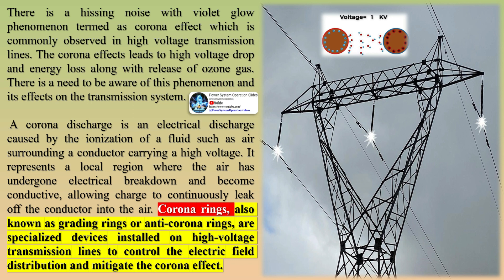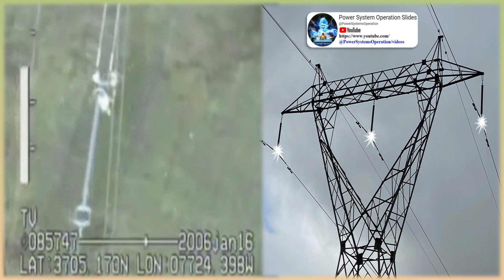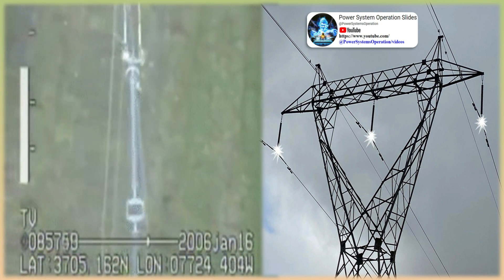The ionized air acts as a virtual conductor, producing a hissing sound with a luminous violet glow. This hissing noise with violet glow phenomenon, termed the corona effect, is commonly observed in high-voltage transmission lines. The corona effect leads to high voltage drop and energy loss, along with the release of ozone gas. There is a need to be aware of this phenomenon and its effects on the transmission system.